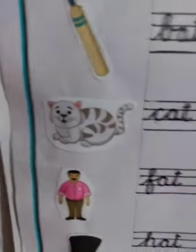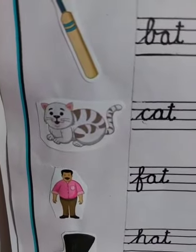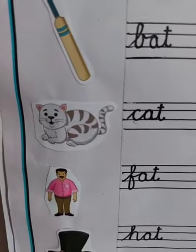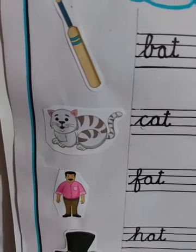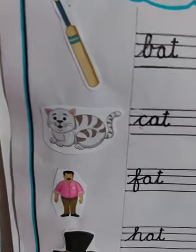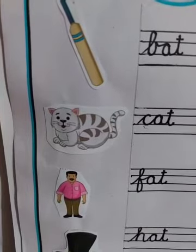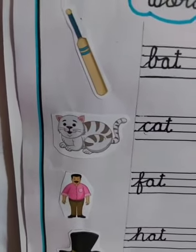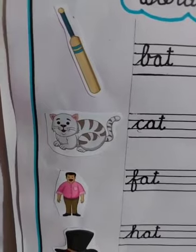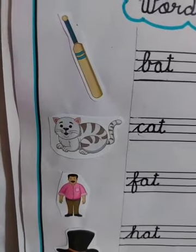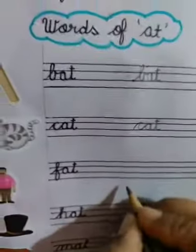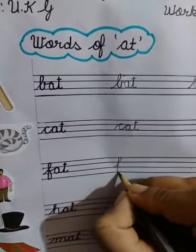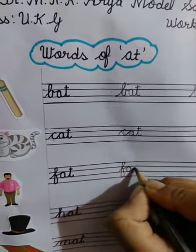Which picture is this? Yes, this is a man, but the man is very fat. Do you know the meaning of fat? Fat means overweight. The man is fat. You will write here: fat.